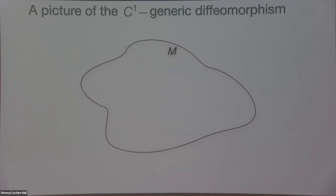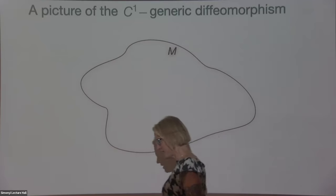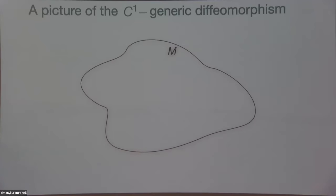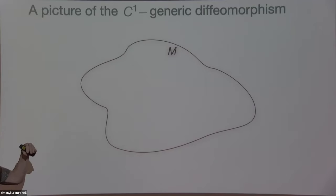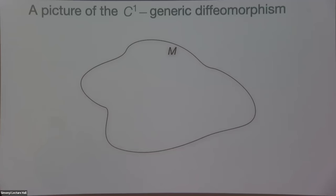Our proof adapts this and one other idea, putting it together with a picture of what the C1 generic diffeomorphism looks like. This is summarizing work that occurred prior to our paper, which we use to complete our proof.